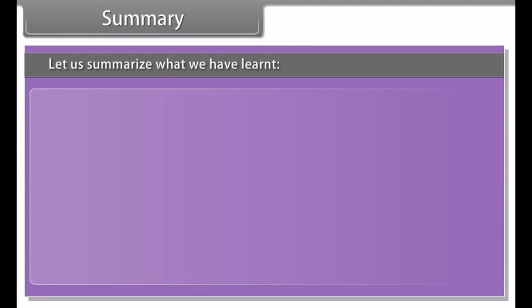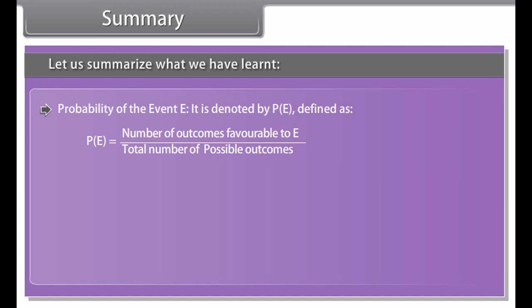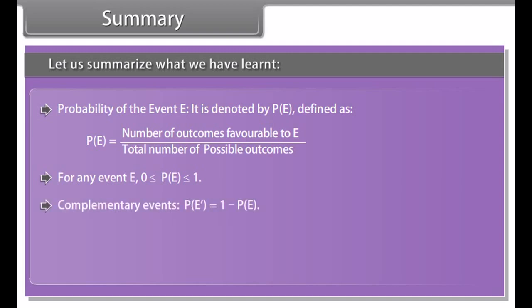Summary: let us summarize what we have learned. Probability of event E: P(E) equals number of outcomes favorable to E by total number of possible outcomes. For any event E, 0 is less than or equal to P(E) less than or equal to 1. Complementary events: P(not E) equals 1 minus P(E). Impossible event: the probability of an impossible event is 0. Sure event: the probability of a sure event is 1.